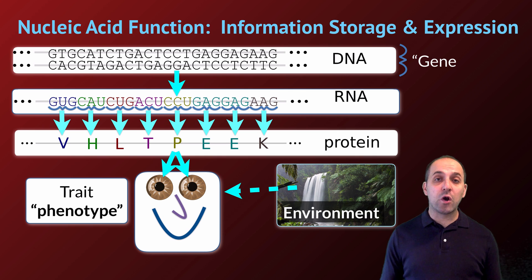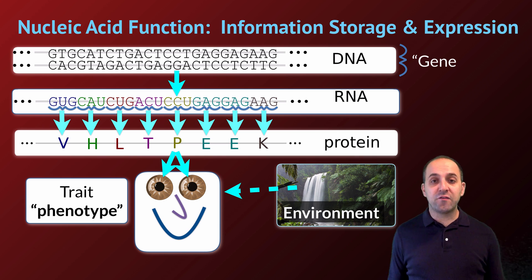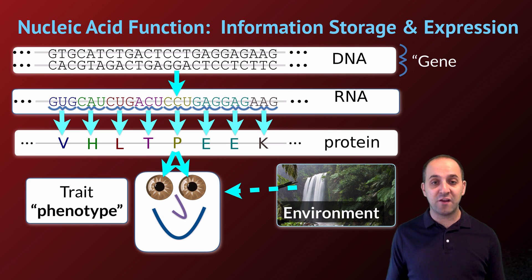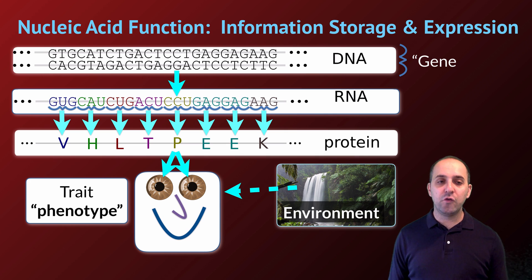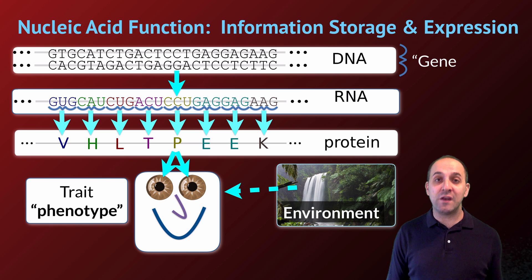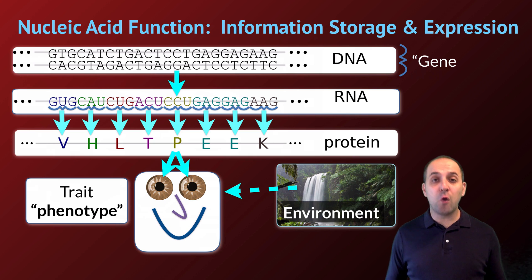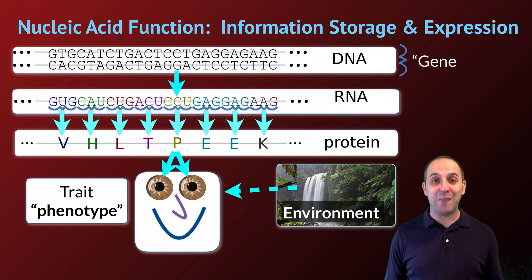Nucleic acids function as the information storage and expression vehicle inside of cells. Instructions are stored in the nucleus of cells in DNA molecules. Those instructions are then copied into RNA molecules if they're going to be expressed in the cell, and then the information in RNA is used to produce proteins. It's the action of proteins combined with the action of the environment that leads to phenotypes or traits in an organism. Outside of this macro-level understanding, you don't need to know too much else about nucleic acids for this unit — they're going to get an entire unit all to themselves later in the course.